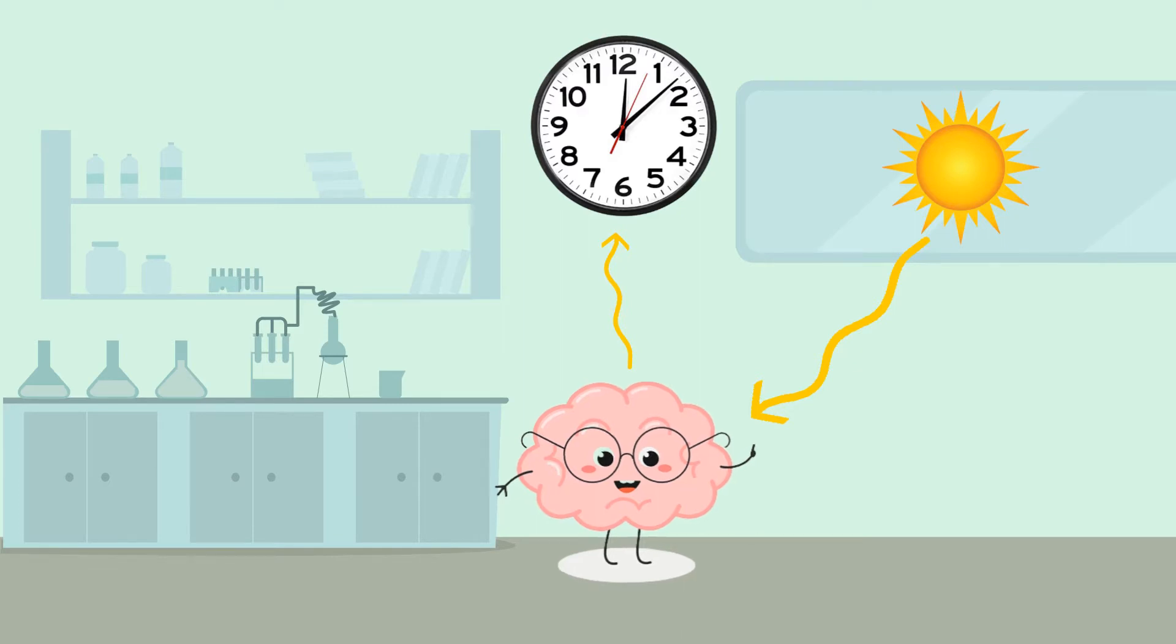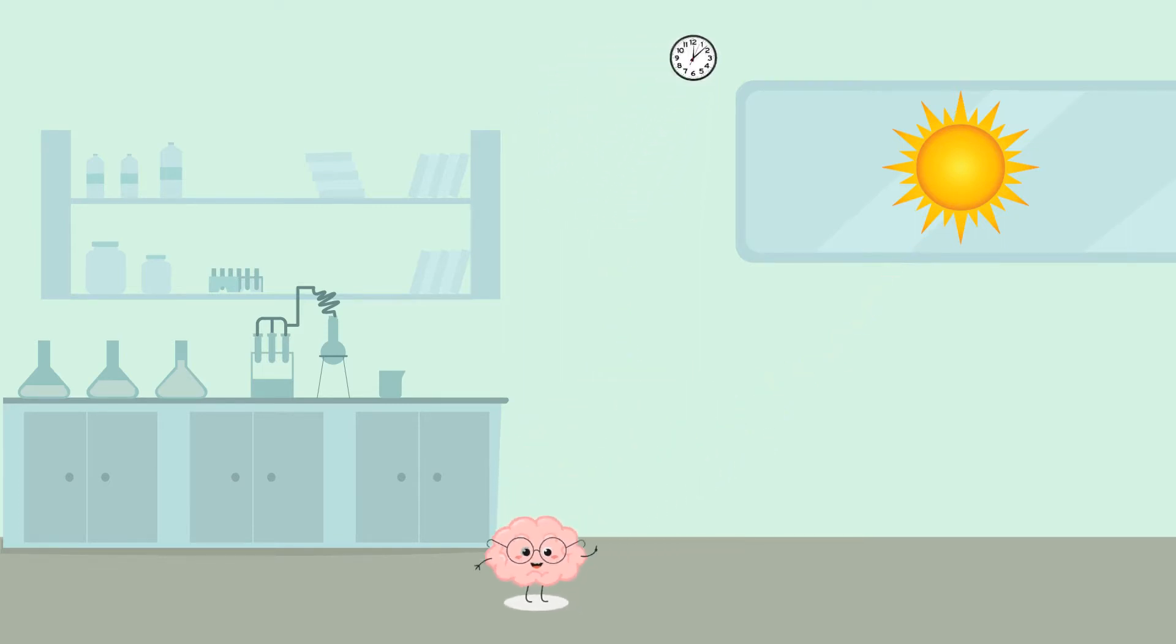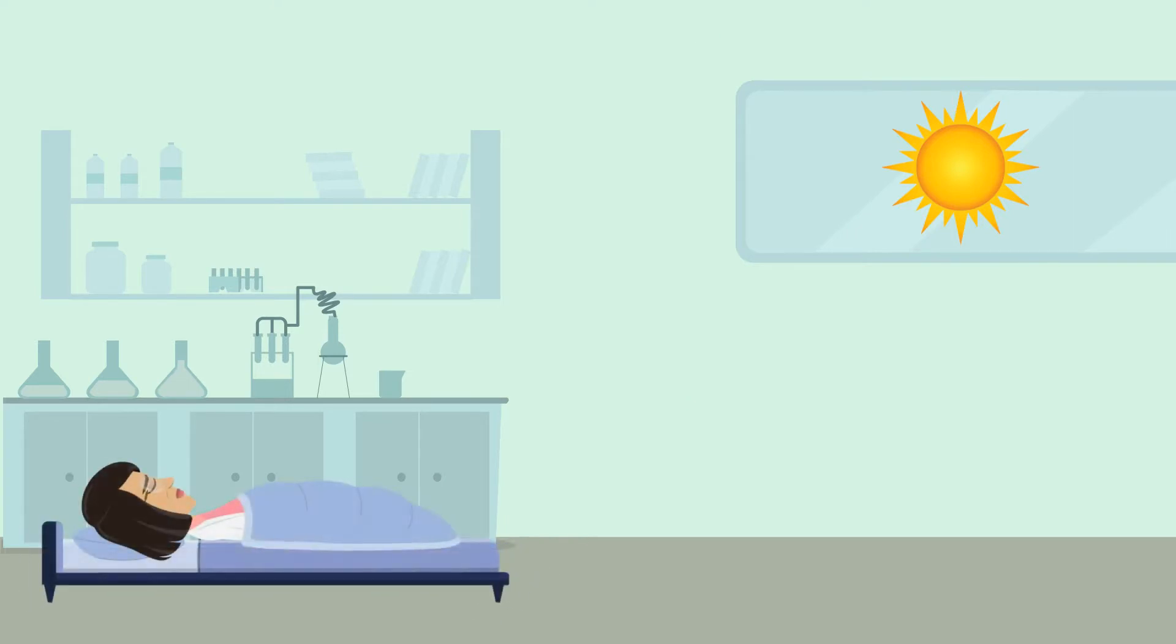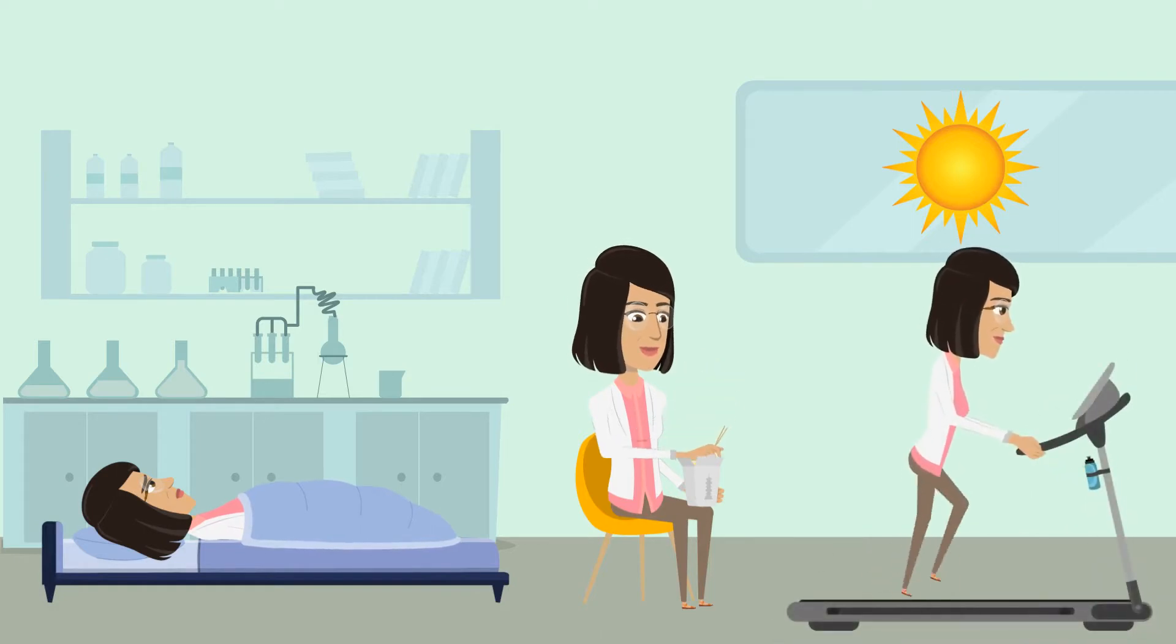For example, these biological clocks are important so that we are tired at night, we are hungry when our bodies need food, and so that we are awake during the day to exercise and carry out other important tasks. We have adapted to these behaviors with the patterns of the sun, which is why natural light patterns are important for circadian rhythms.